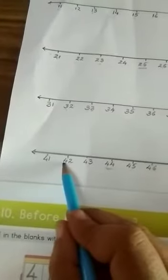43. So, what is before this 43 on this number line? 42. So, write down 42.